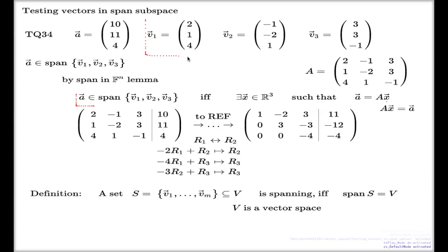And so these three vectors of question 34, they are spanning. These three vectors together as a set, it is a spanning set for the R³ vector space.